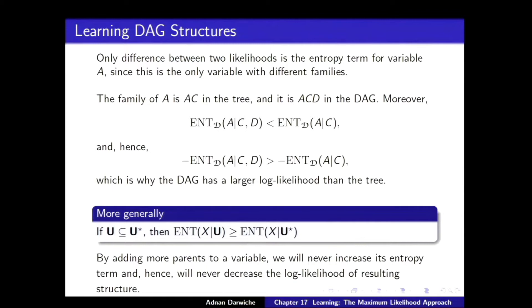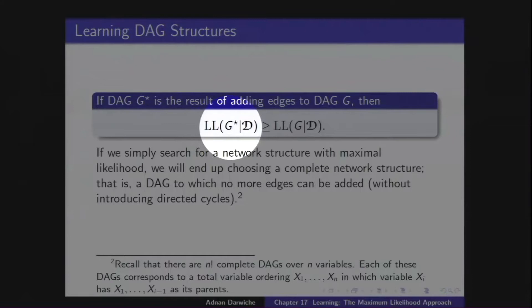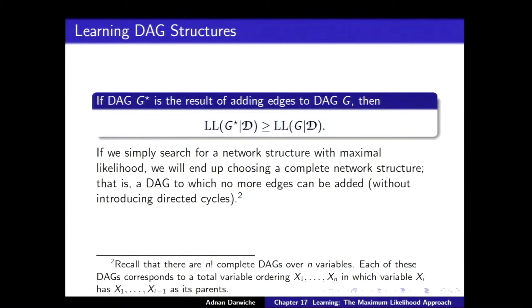This means that by adding edges — which increases the number of parents per node — you cannot worsen the likelihood. The implication is that if you use log likelihood as the sole principle for structure search, you will end up favoring complete DAGs. A complete DAG is one where you cannot add more edges without creating directed cycles. There are n-factorial complete DAGs over n variables, obtained by assuming a total ordering x1 through xn and making all preceding variables parents of each xi.